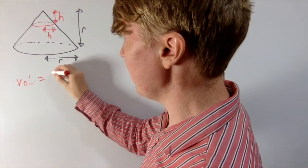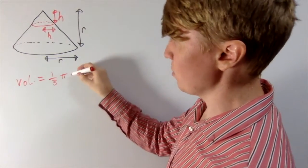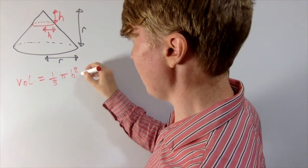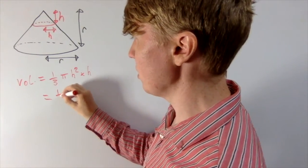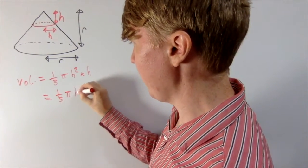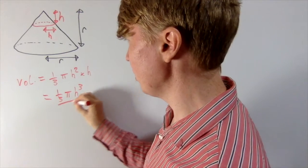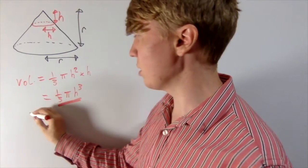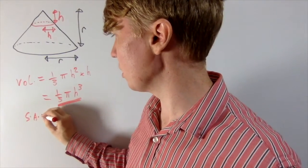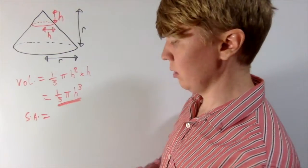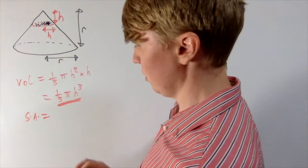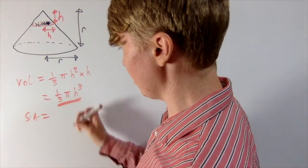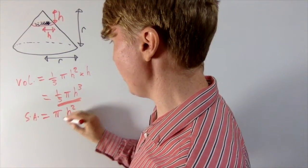So the volume is a third pi times the radius squared, which is H squared, multiplied by the height, which is H. So this gives us a third pi H cubed for our volume. And then the surface area, this one's actually even easier because it's just the area of this little circle here with radius H. So the surface area, this is just pi H squared.